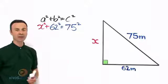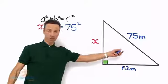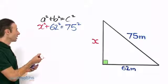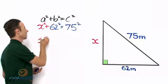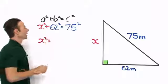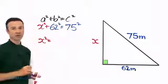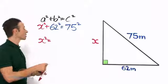Now remember what I said earlier, we subtract whenever we are given the hypotenuse and we are looking for one of the side links. So what does that mean? It means we are going to get something like this: x squared equals, and then we take away this and bring it over to that side, so then it becomes 75 squared minus 62 squared. So let us subtract that from both sides.